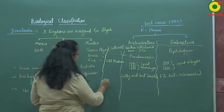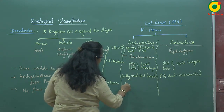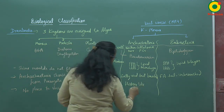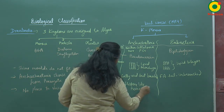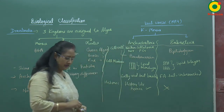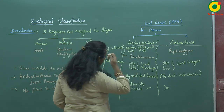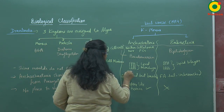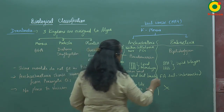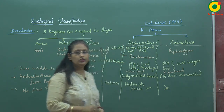One more distinguishing feature is histone proteins. Histone-like proteins are present in Archaebacteria, whereas they are absent in Eubacteria. Also, the fatty acid tails are connected by ether bonds in Archaebacteria, while ester bonds are present in the cell membrane of Eubacteria.